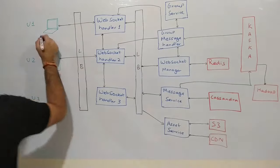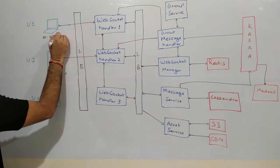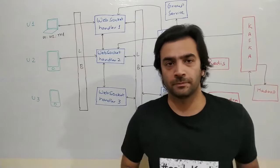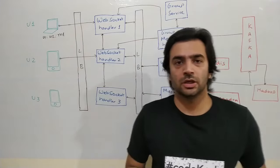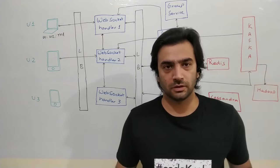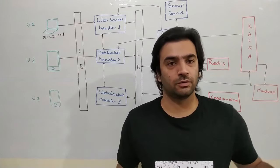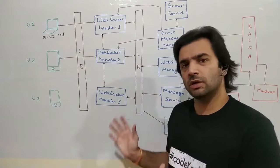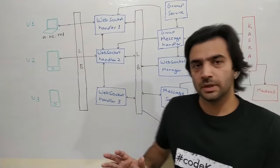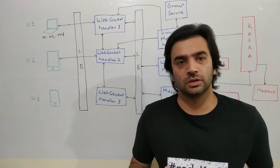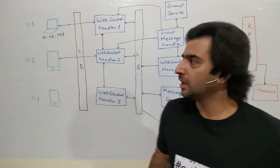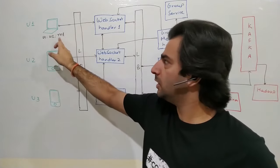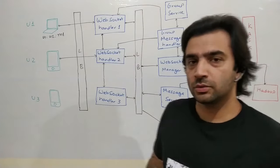User1 wants to send a message to user2 with message ID M1. User1 is talking to something called WebSocket Handler 1. A WebSocket handler is a server on our backend that keeps open connections with all active users — live users who have an active internet connection. There will be many of these machines distributed across the globe so that people in a certain geography talk to servers nearer to them, reducing latency. User1 is connected to WebSocket Handler 1 and sends the message M1 to user2 through it.